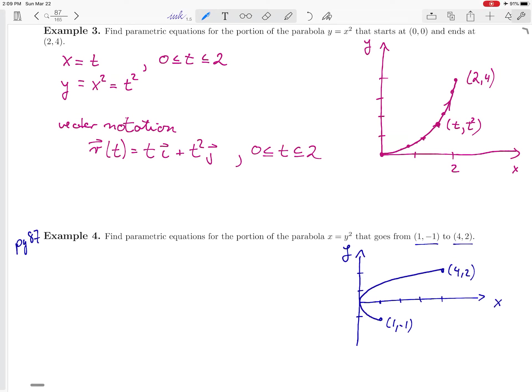And the way that I just drew it, actually I went the opposite direction. I'm supposed to start at 1, minus 1 and go to 4, 2. So, the direction of movement would be this way, starting at 1, minus 1 and moving towards 4, 2.